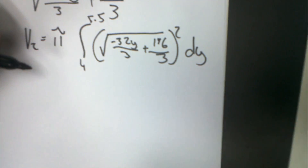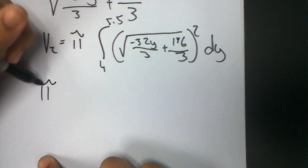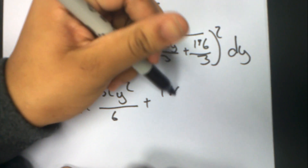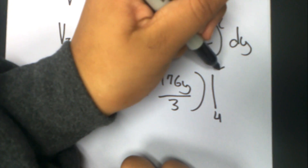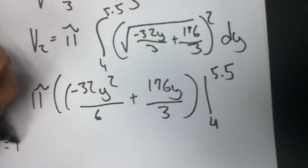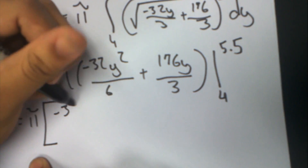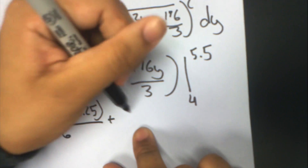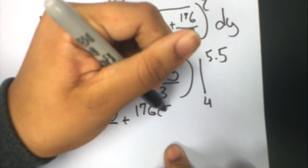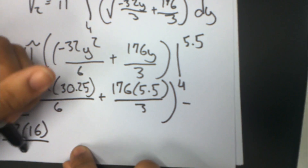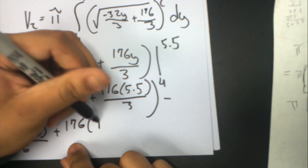So now, we expand: pi times negative 32y squared over 6 plus 176y over 3, evaluated from 4 to 5.5. Plugging in 5.5 gives negative 32 times 30.25 over 6 plus 176 times 5.5 over 3, minus the result for y = 4: negative 32 times 16 over 6 plus 176 times 4 over 3.